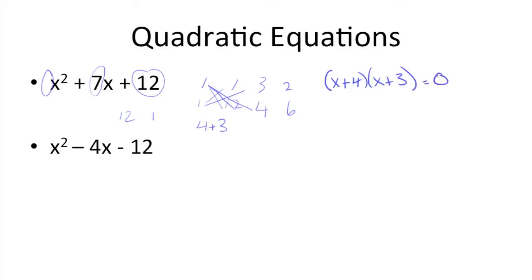And now to get the roots, you just need to see what value of x would make this equal to 0, because 0 times whatever this is will get us 0, and then vice versa — see what we could substitute for x to make this 0, so that this times this will get us 0. So here it's just negative 4, and here it's negative 3. And those are the roots.